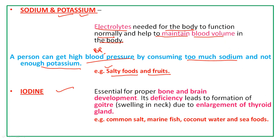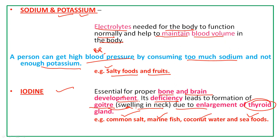Iodine is essential for proper bone and brain development. Deficiency of iodine leads to formation of a goiter — a swelling in the neck due to enlargement of the thyroid gland. We can address this deficiency by consuming common salt (iodized), marine fish, coconut water, and sea foods.